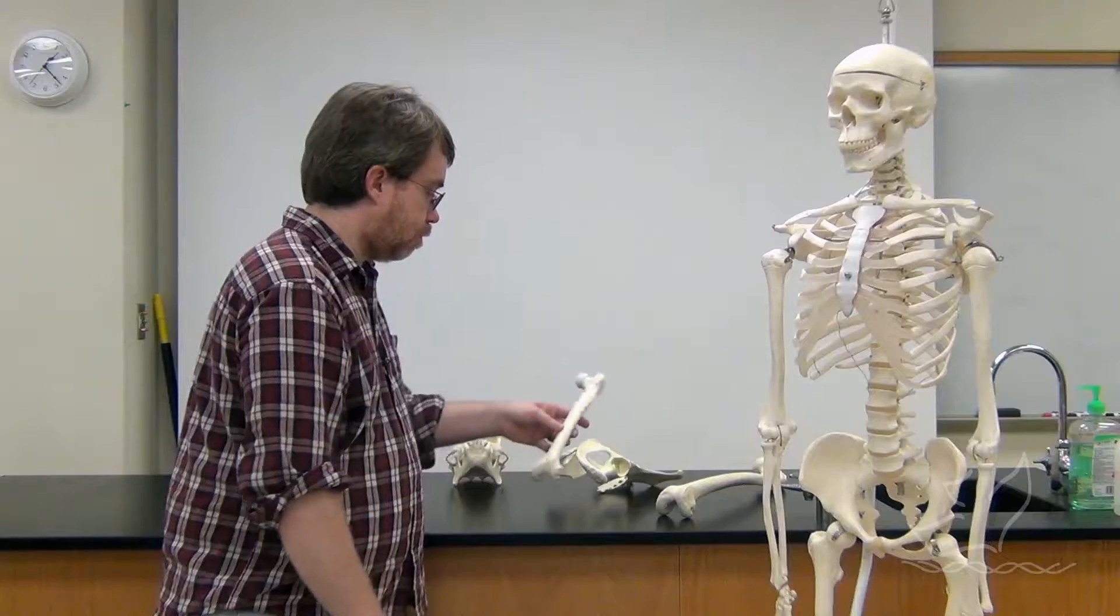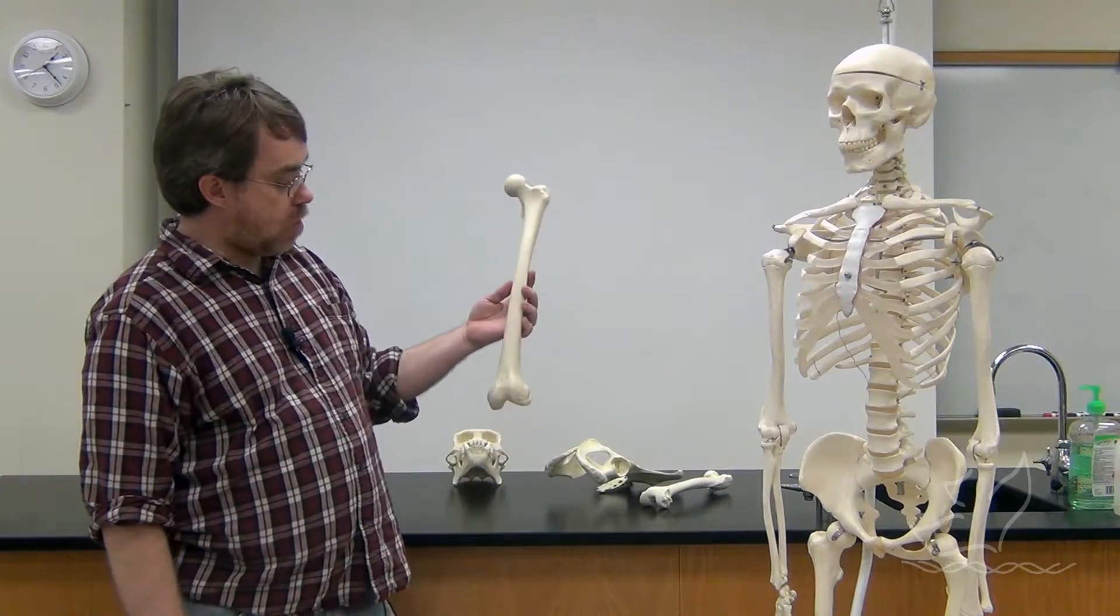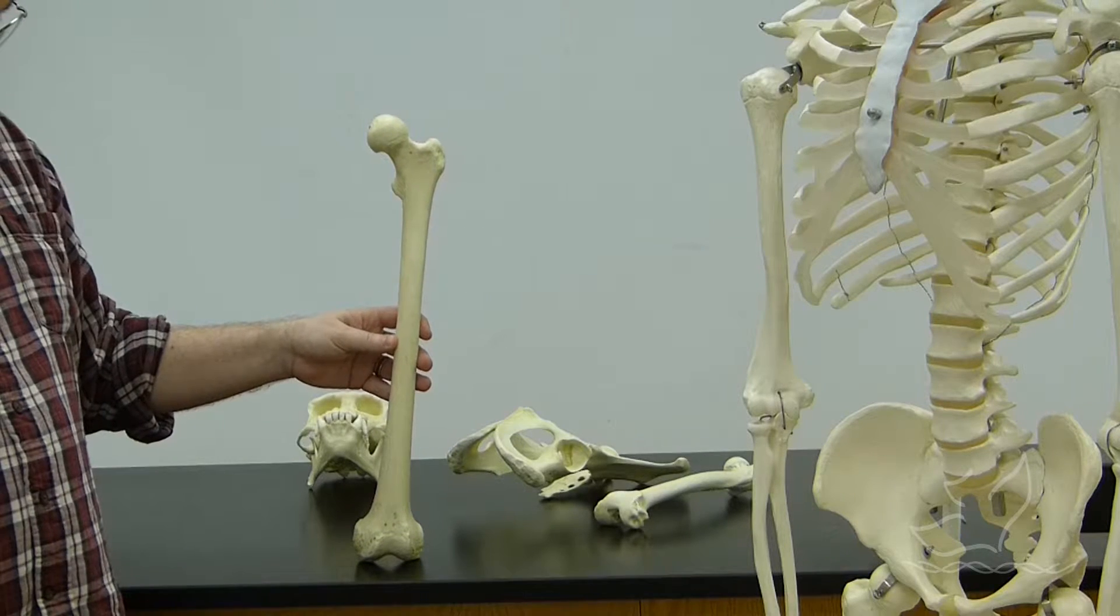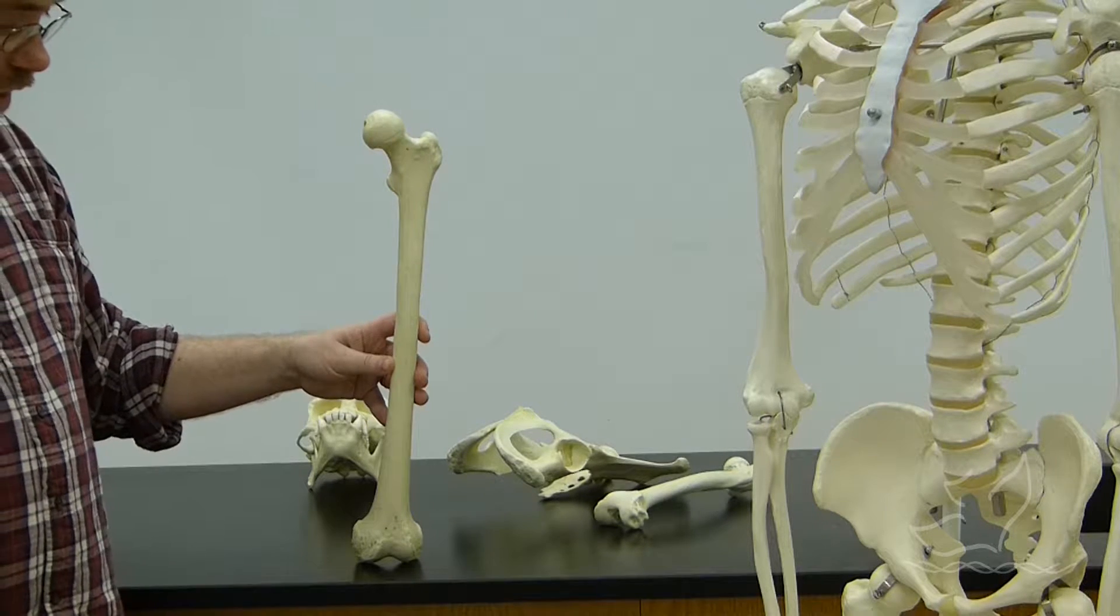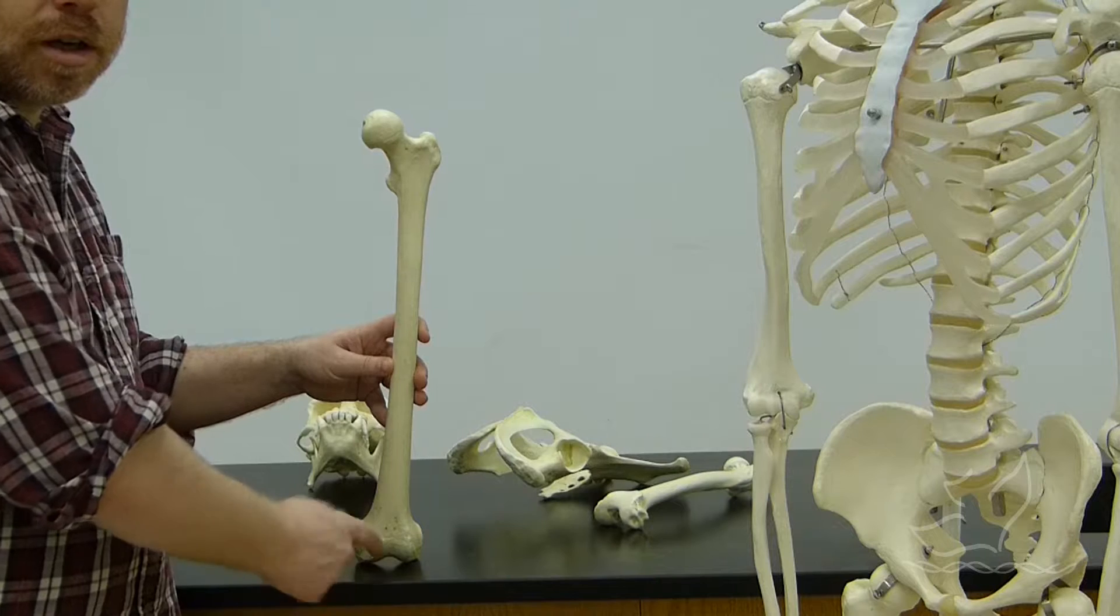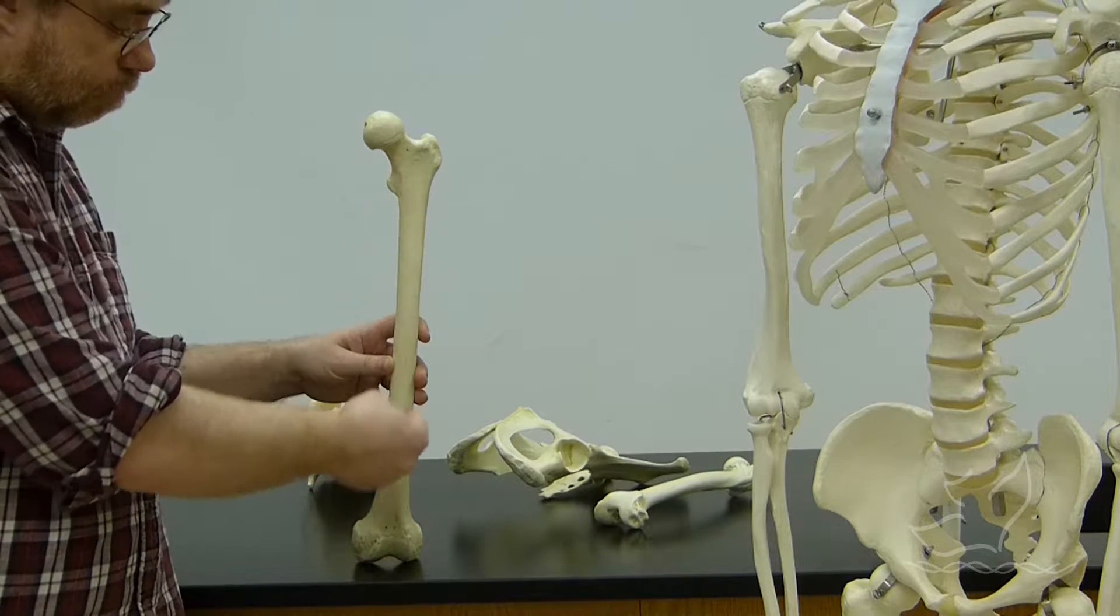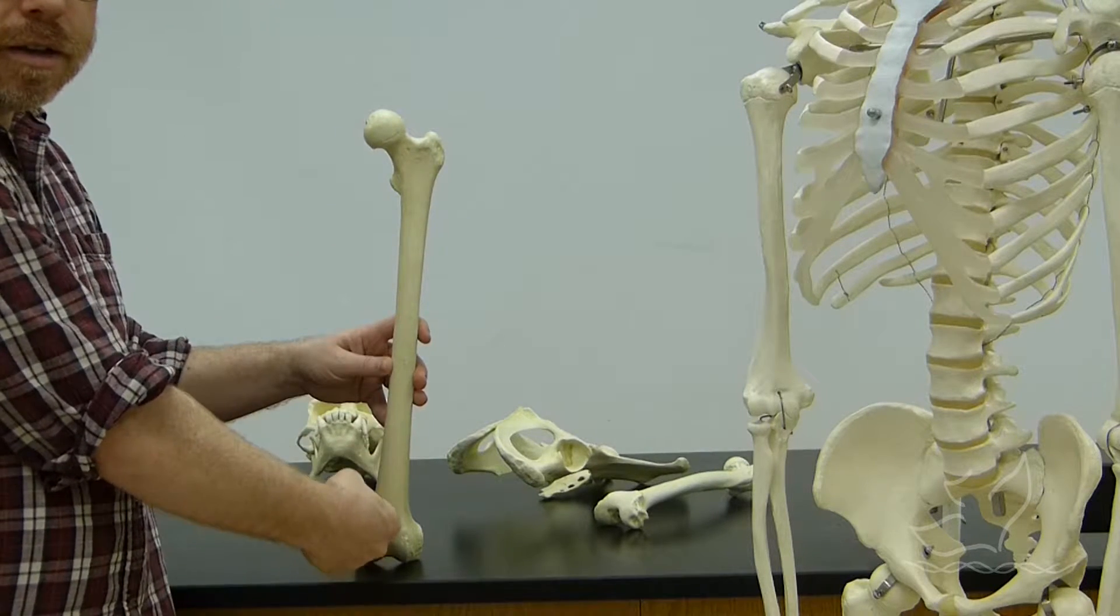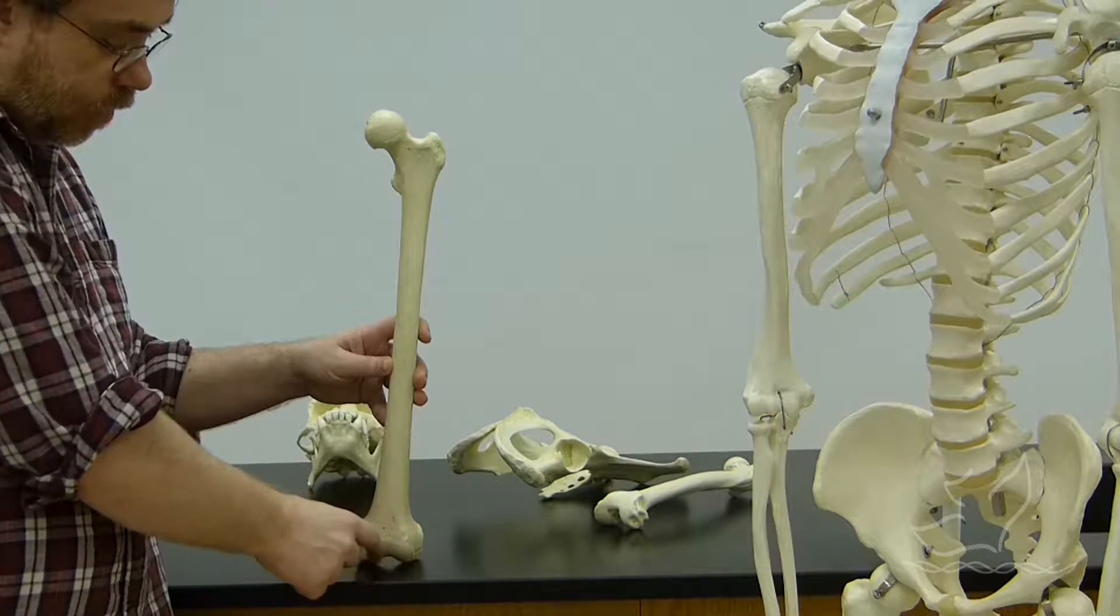When we look at the human femur, the human thigh bone, things are a little different. If I set that bone down so that it is flat on the table, you can see here's the flat surface of the table, but here the shaft of the femur goes up at an angle. So as you come down from the hip here, this is angling the shaft of the femur underneath of the body. Why is that an advantage?